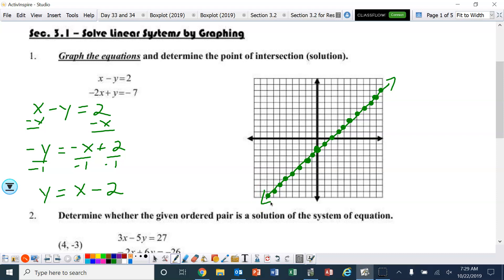Now the next one. We've got negative 2x plus y equals negative 7. All we need to do to get y by itself on that one is add the 2x. So, y equals 2x minus 7.